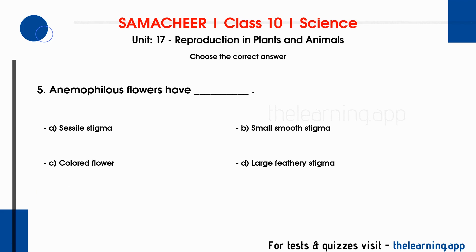Fifth question: anemophilous flowers have DASH. Option A. Sessile stigma, Option B. Small smooth stigma, Option C. Colored flower, Option D. Large feathery stigma.